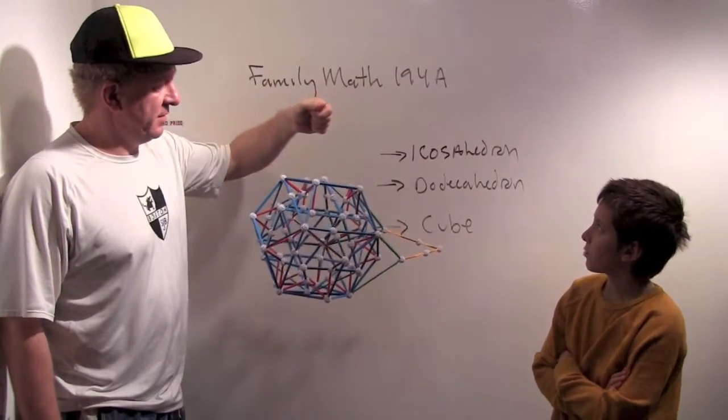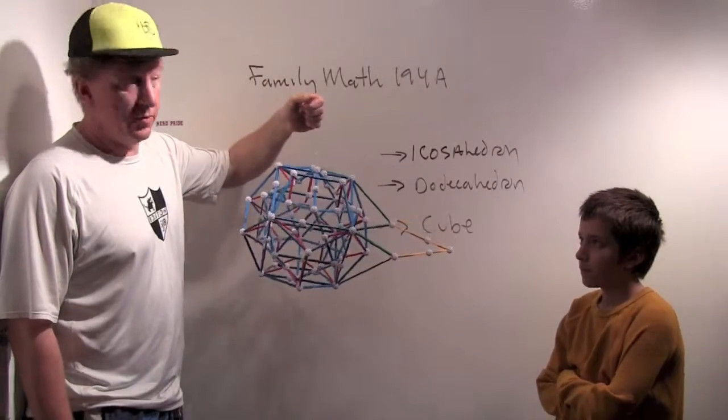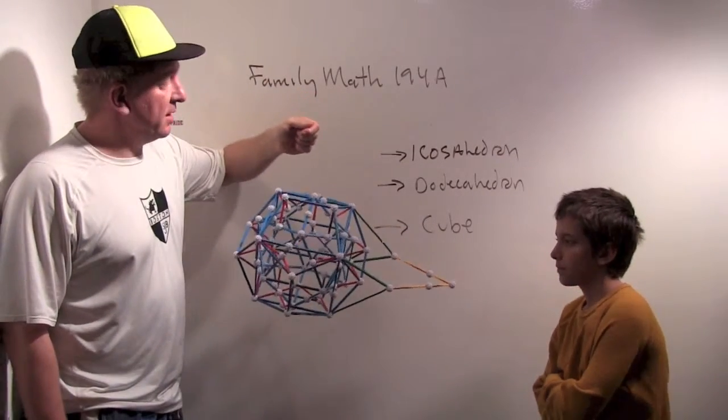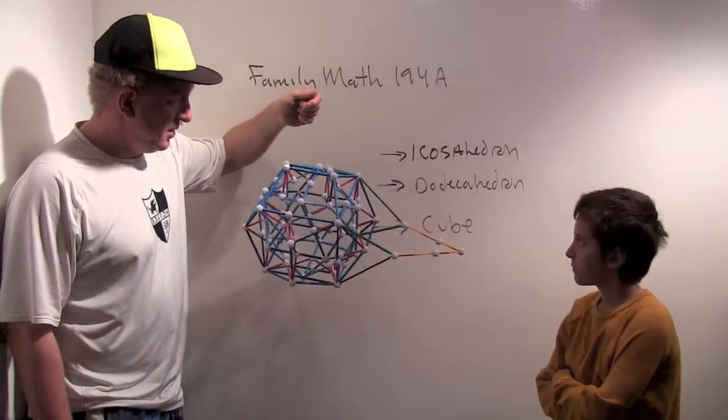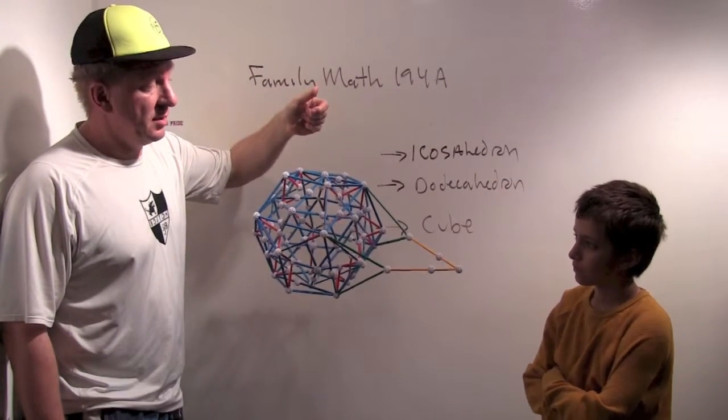Okay, good morning. Welcome to Family Math 194A. So today we're doing some zomtool work, and we're looking at a shape that's an icosahedron with a dodecahedron and a cube. It's the same shape we looked at about a week ago.